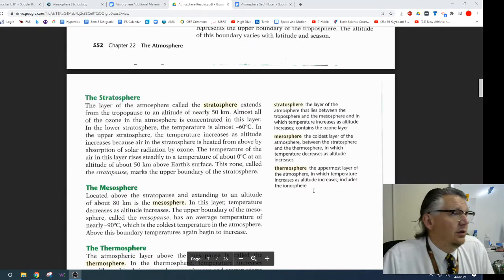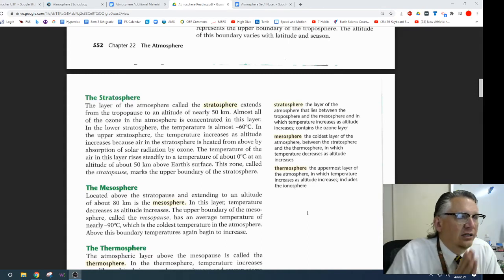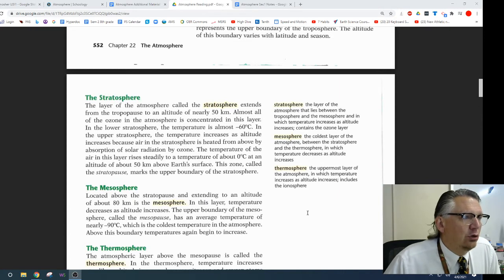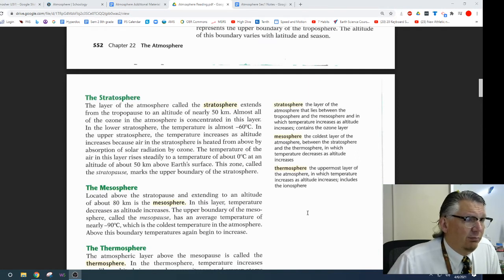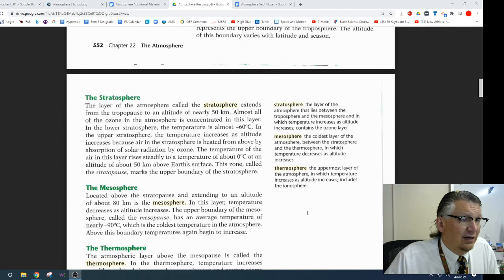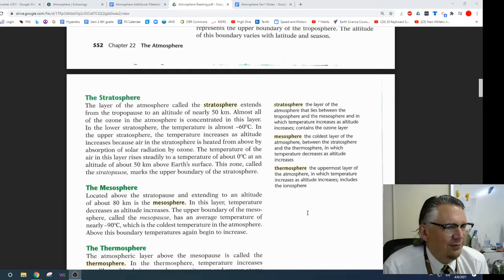The stratosphere. The layer of the atmosphere called the stratosphere extends from the troposphere to an altitude of nearly 50 kilometers. Almost all of the ozone in the atmosphere is concentrated in this layer. In the lower stratosphere, the temperature is almost negative 60 degrees Celsius. In the upper stratosphere, the temperature increases with altitude increases, because air in the stratosphere is heated from above by the absorption of solar radiation by ozone. The temperature of the air in this layer rises steadily to a temperature of about 0 degrees Celsius at an altitude of about 50 kilometers above Earth's surface. This zone, called the stratopause, marks the upper boundary of the stratosphere.